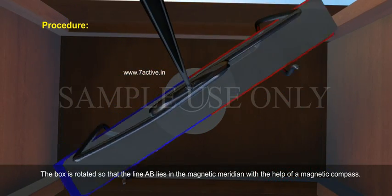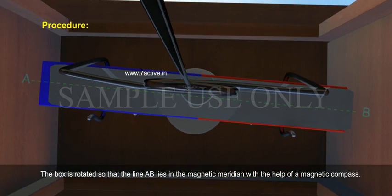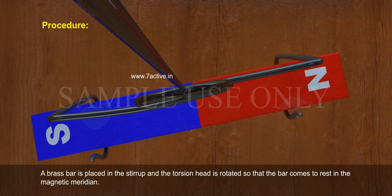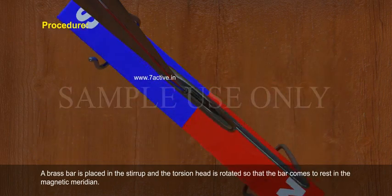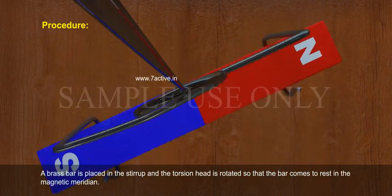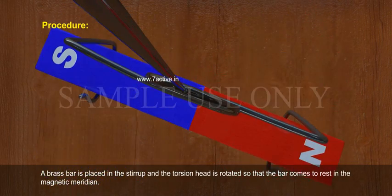Procedure: The box is rotated so that the line AB lies in the magnetic meridian with the help of a magnetic compass. A brass bar is placed in the stirrup and the torsion head is rotated so that the bar comes to rest in the magnetic meridian.